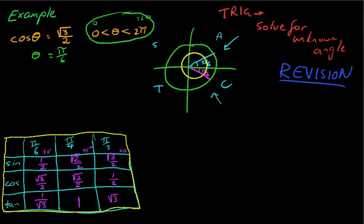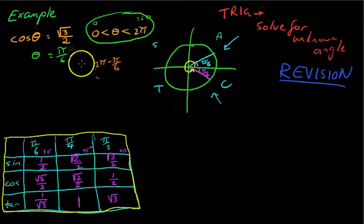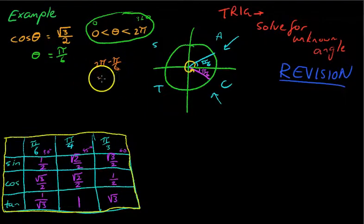We need to measure that angle all the way around the circle. So in other words, we need to know what this angle is. And it's pretty easy to work that one out. We know that the whole way around the circle will be 2π. And we know that this little purple bit here is π on 6. So 2π minus π on 6.